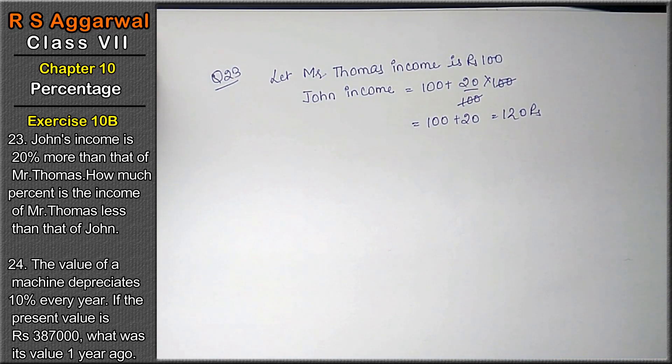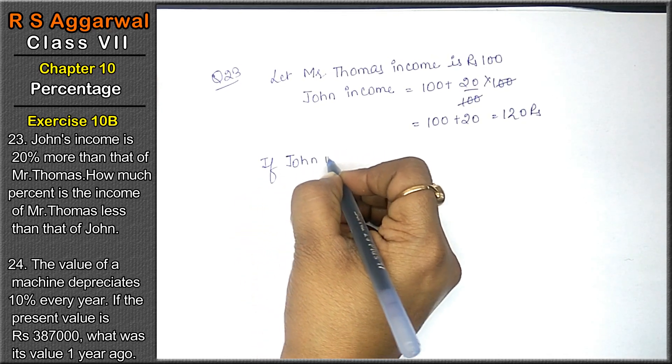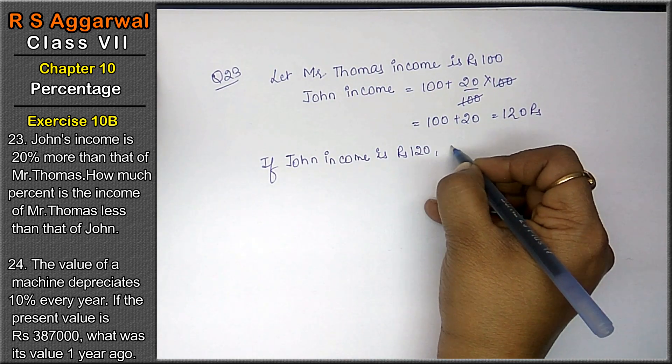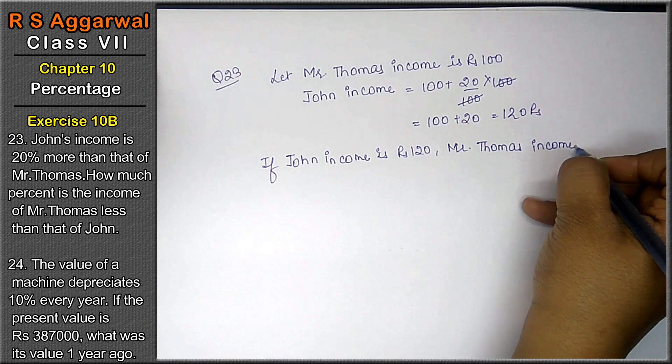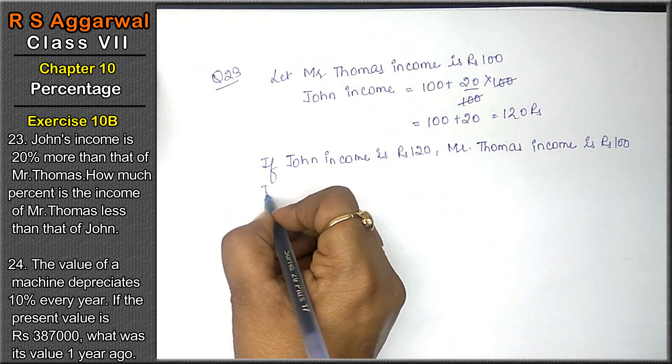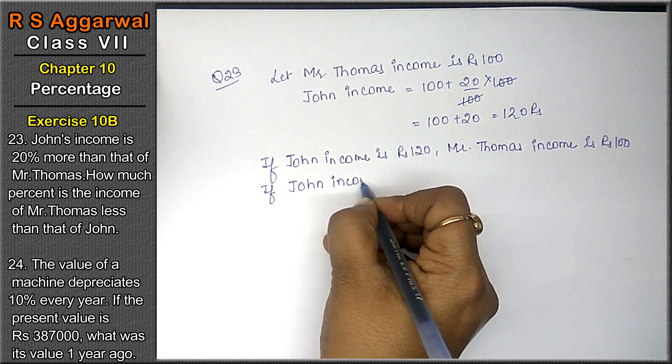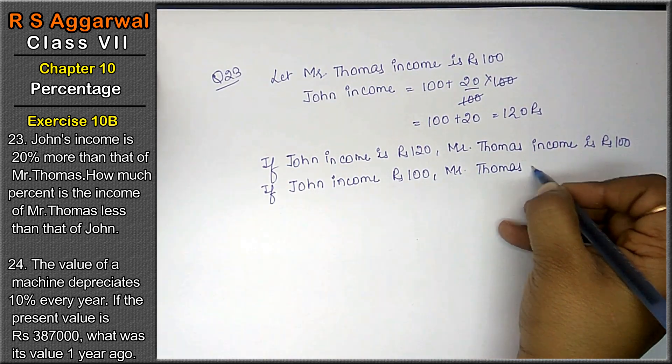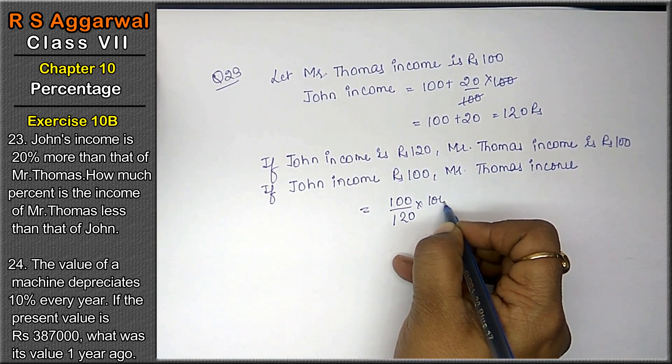Now, what he is saying: how much percentage is the income of Mr. Thomas less than John's? That means if John's income is Rs. 120, at that time Mr. Thomas's income is Rs. 100. Right friends, if John's income will become Rs. 100, then Mr. Thomas's income will be Rs. 100 upon Rs. 120 into Rs. 100.